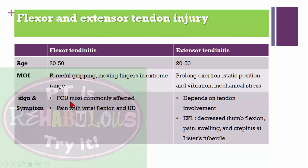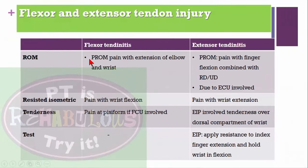If flexor carpi ulnaris is involved — the most commonly affected muscle-tendon unit in flexor tendon injury — the patient may have pain with wrist flexion and ulnar deviation. Passive range of motion testing shows pain with extension of the elbow and extension of the wrist. Resisted isometric test is positive with pain in wrist flexion. Tenderness is present at the pisiform if flexor carpi ulnaris is involved. No special test is specified for flexor tendinitis.